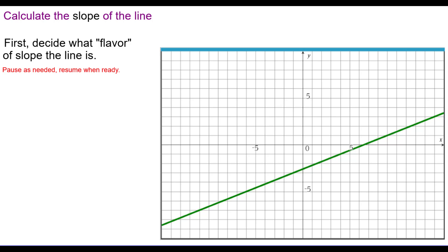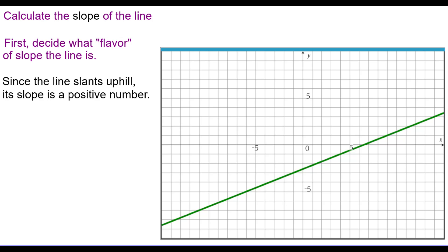First, we need to decide what flavor of slope the line is — that is positive, negative, zero, or undefined. Since this line slants uphill from left to right, its slope is a positive number.